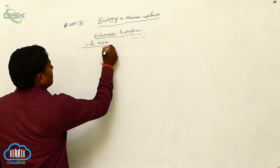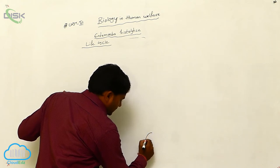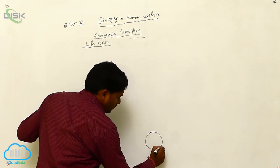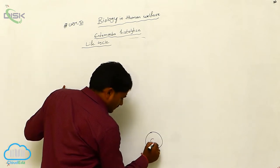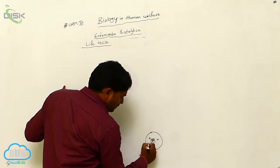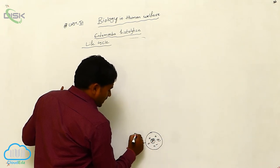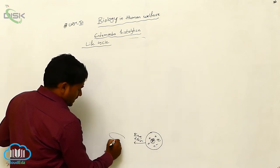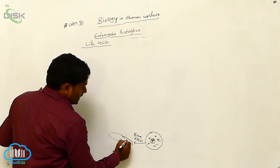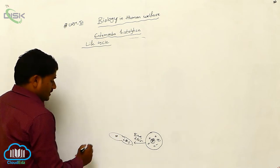A life cycle. So this is the trophozoic stage. The trophozoic stage sometimes undergoes binary fission. Generally, it divides by the binary fission process.